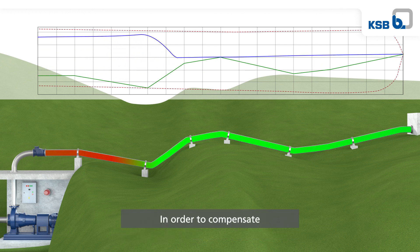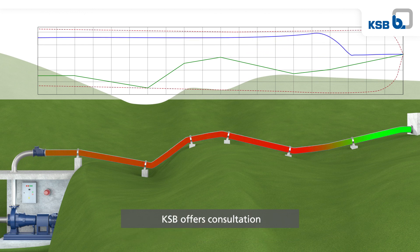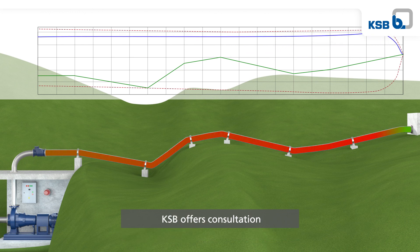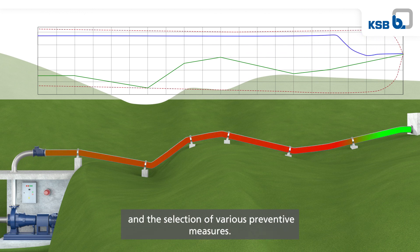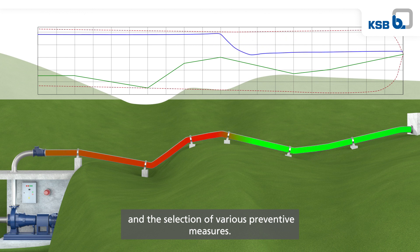In order to compensate the drastic pressure head fluctuations that may occur, KSB offers consultation and the selection of various preventive measures.